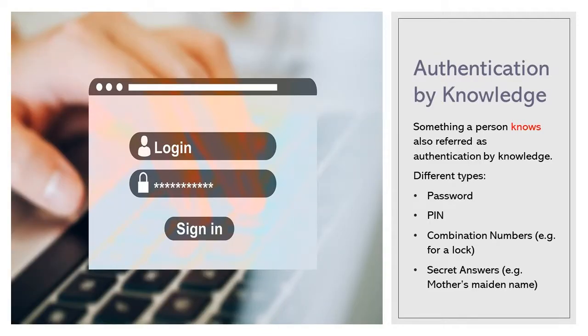Something a person knows is commonly referred to as authentication by knowledge. Examples include a password, a PIN, combination numbers for a lock, and secret answers such as a mother's maiden name. To authenticate a person by something they know is easily achieved and is probably the least expensive method of authentication, but used alone it doesn't really provide the securest method, as information like passwords could easily be hacked and used by someone else to impersonate the legitimate user.